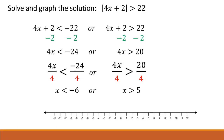Now we can graph the solution on a number line. x is less than negative 6 is all the numbers to the left of negative 6, and x is greater than 5 is all the numbers to the right of 5.